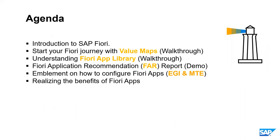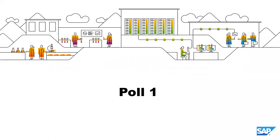The agenda has five sections: SAP Fiori overview, value maps, the Fiori app library, the Fiori app recommendation report (FAR), consumption of EGIs and MTEs — which are expert guided implementation and meet-the-expert sessions — and finally realizing the benefits of Fiori apps. Before starting, we have a quick poll. There are three questions in this poll, so please scroll down to answer all three.